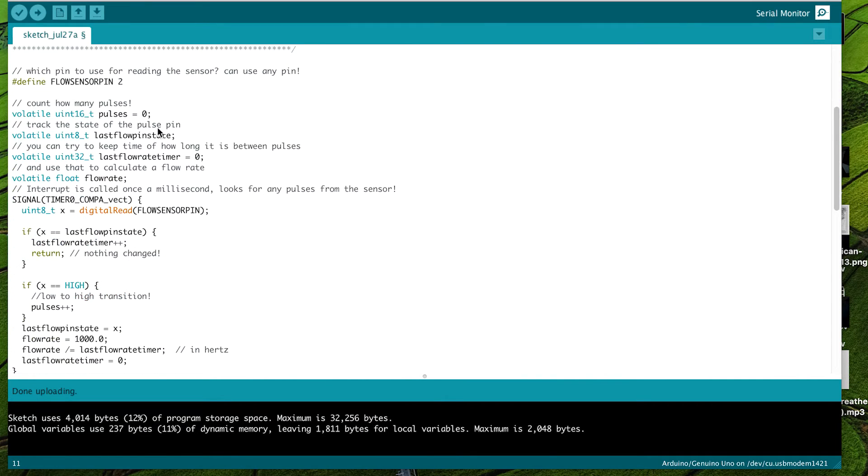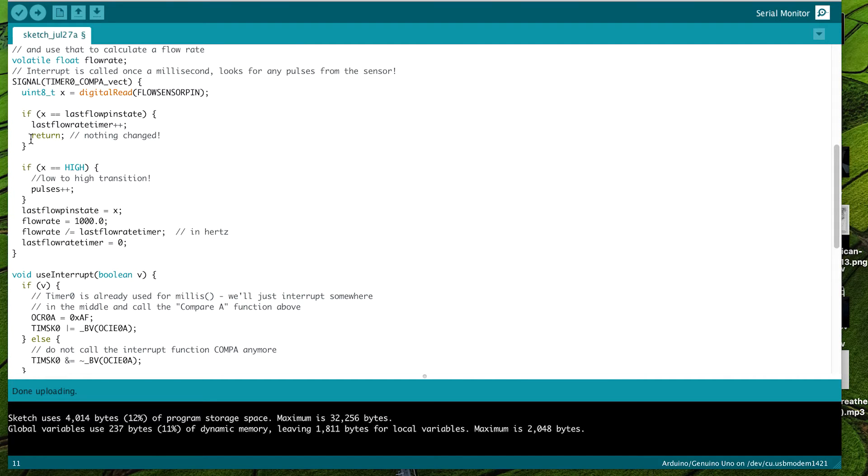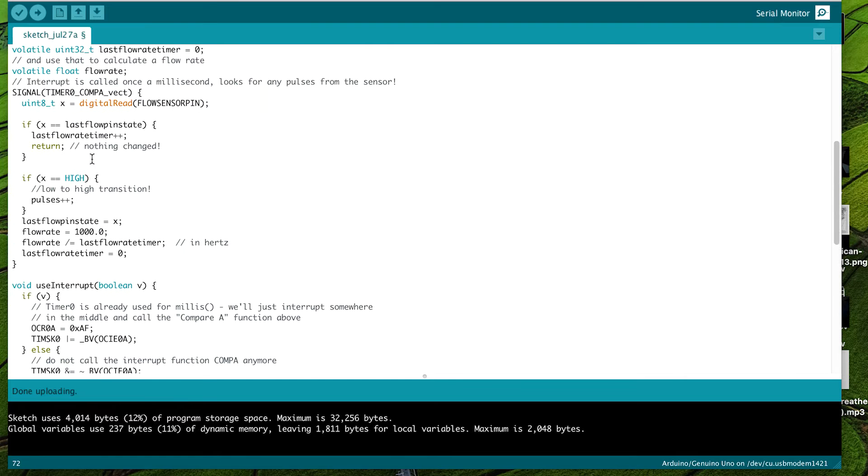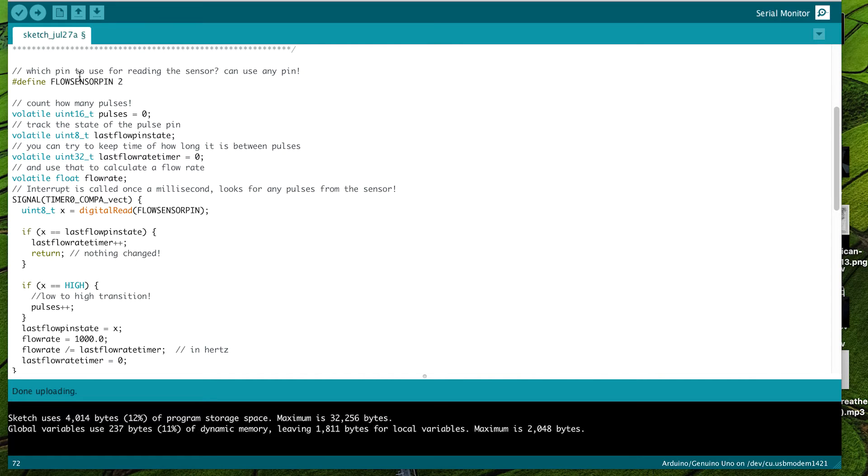What this does is basically sets up an interrupt. This is an interrupt function here that triggers every millisecond. An interrupt is something that you can configure—when something happens, it will call this function. It's not part of your main loop, if you're familiar with Arduino. There's a main loop, but this gets called on its own. It's pretty nice because it's not dependent on your logic. I configure flow sensor pin as two.